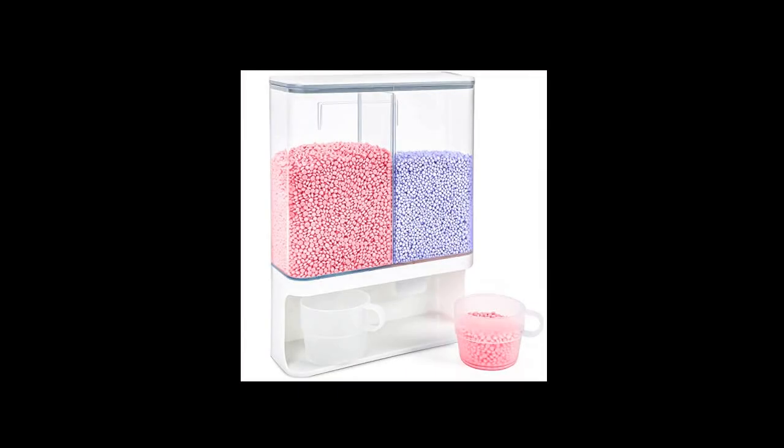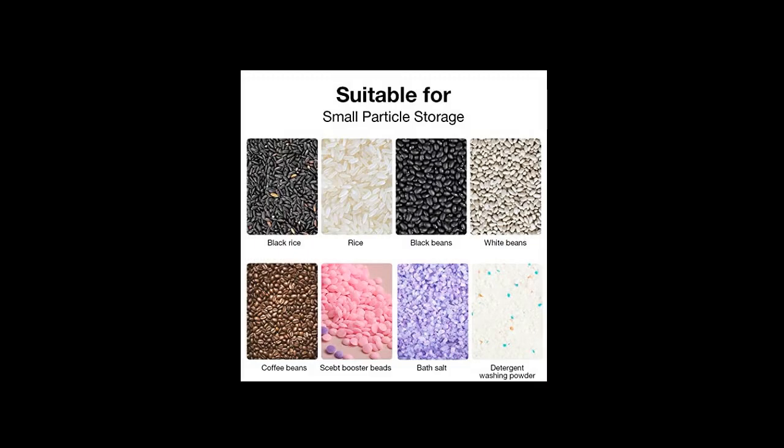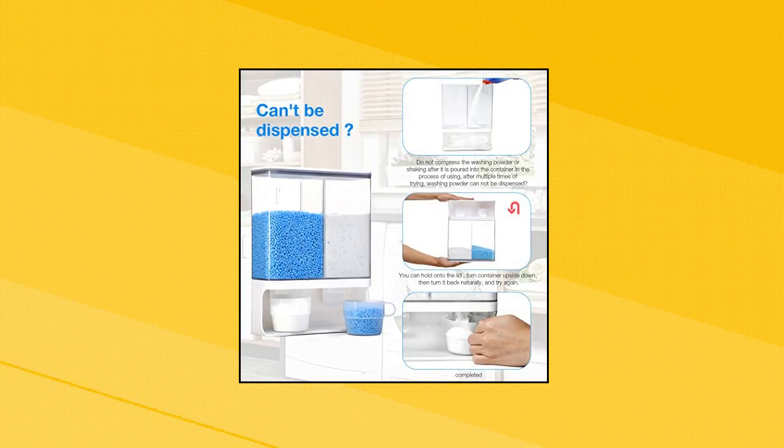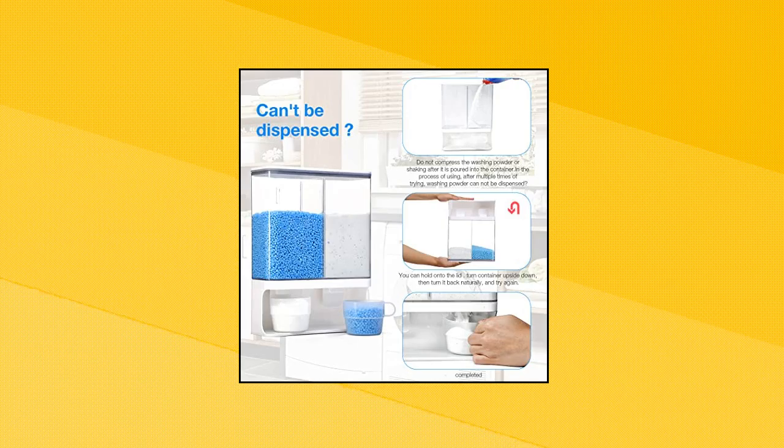One push dispensing. This dispenser can automatically dispense the rice by pushing the trigger, which makes dispensing rice very easy. Space saving. The rice storage container can be placed on the kitchen countertop, or can be mounted on a smooth wall with strong non-marking stickers.